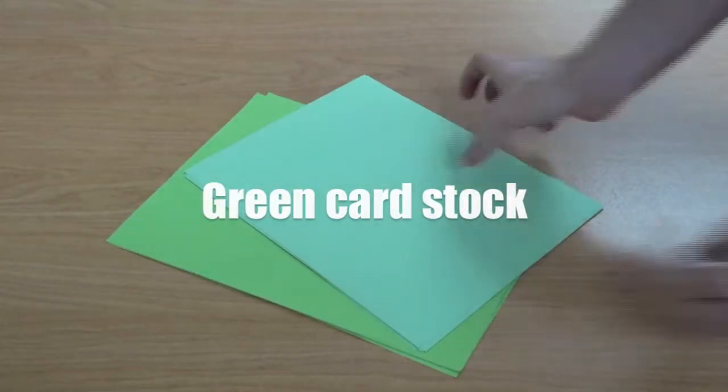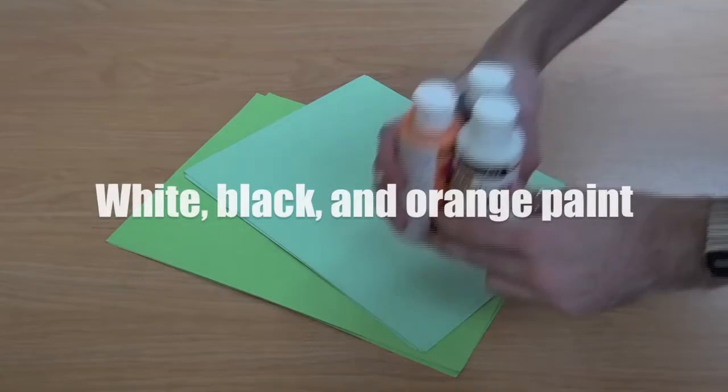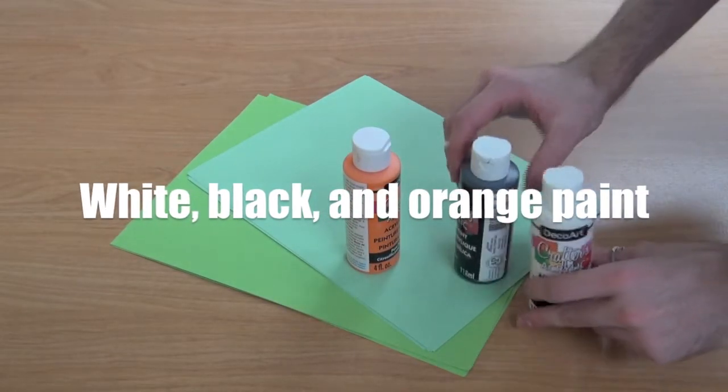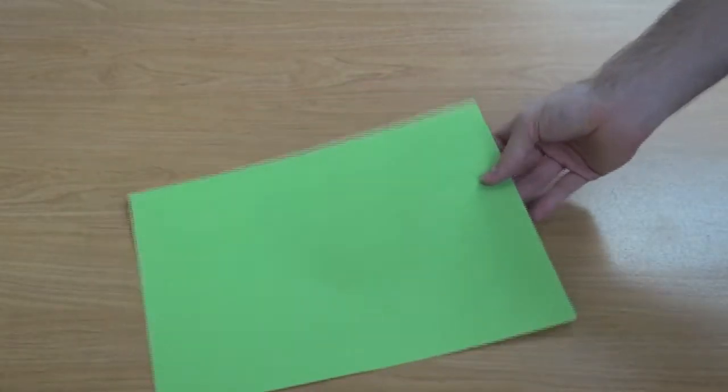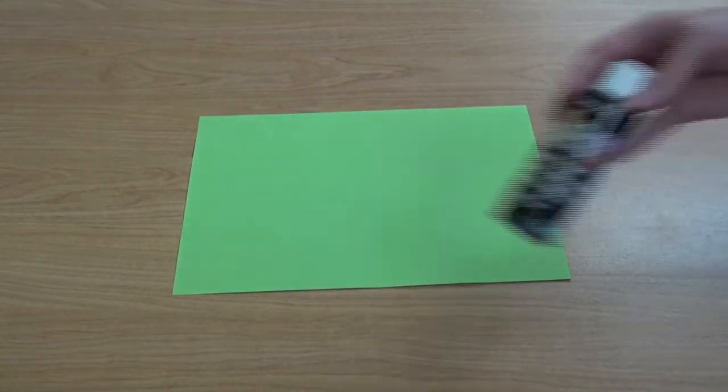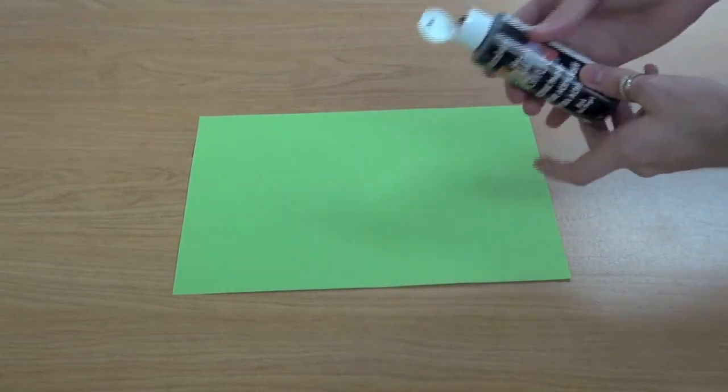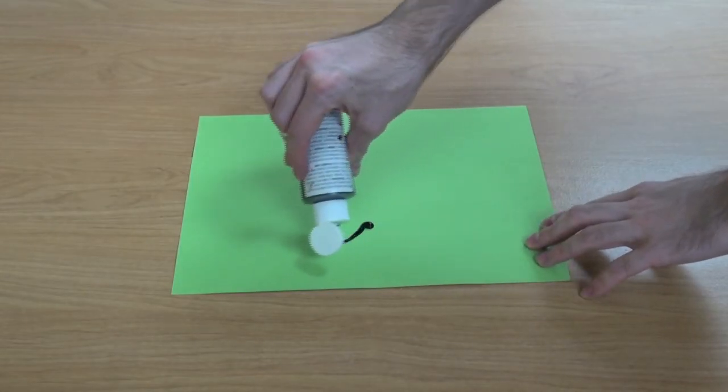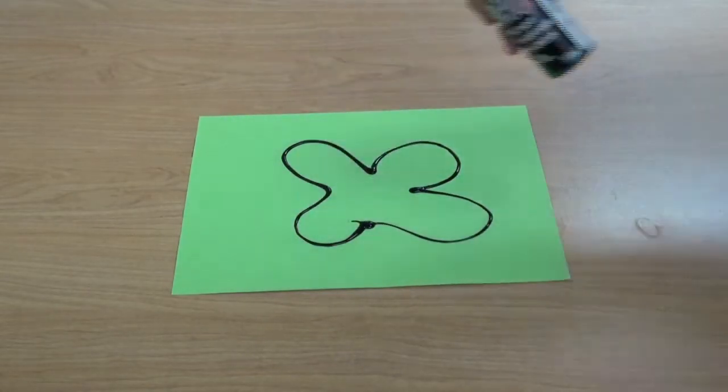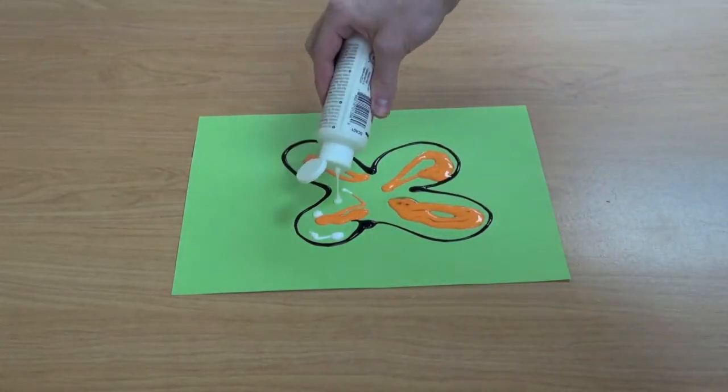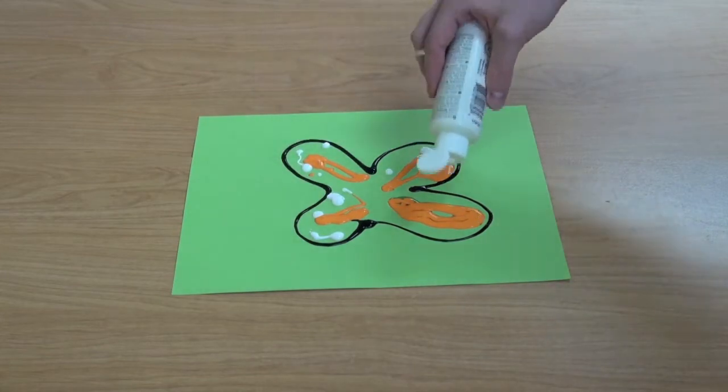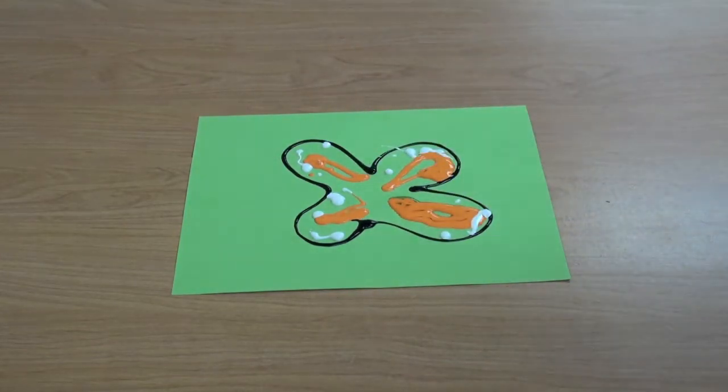For our next project, we're going to need green paper, preferably cardstock, and white, black, and orange paint. First, we're going to lay down our paper so that it is landscape. Then we're going to take our black paint and start making a butterfly outline. This project's really fun and easy because you can make up whatever patterns you like, add all of your colors, and make something super interesting from it.